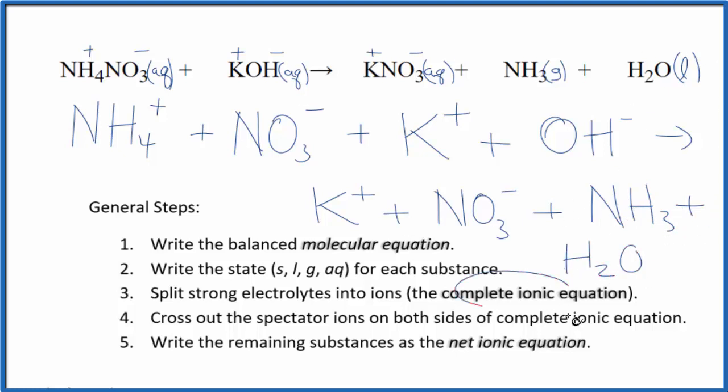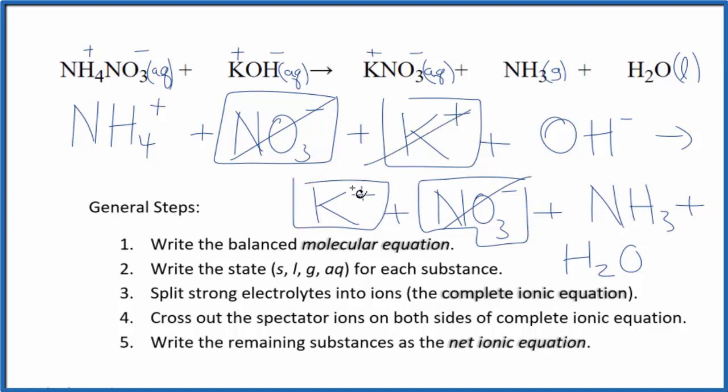Now we're going to cross out spectator ions. They're on both sides. So when I look, I see that I have NH4 plus here and NH3 here. They're different. I can't split that apart. But I do see in the reactants, I have a nitrate ion and here in the products again. We can get rid of that. I have a potassium ion in the reactants and in the products. Get rid of that.